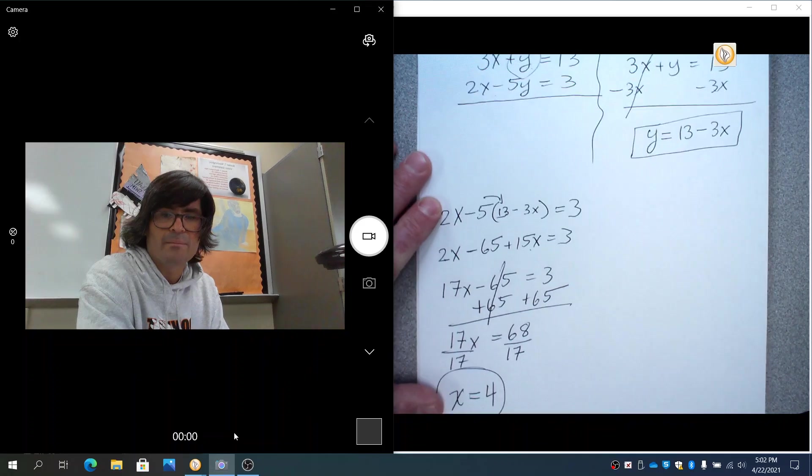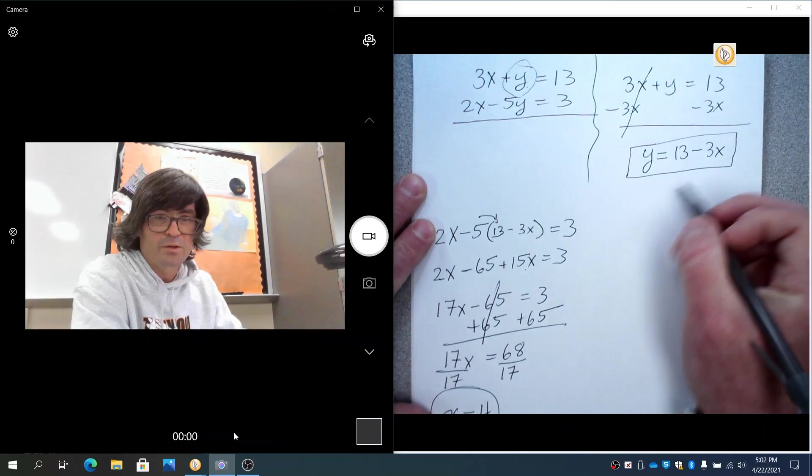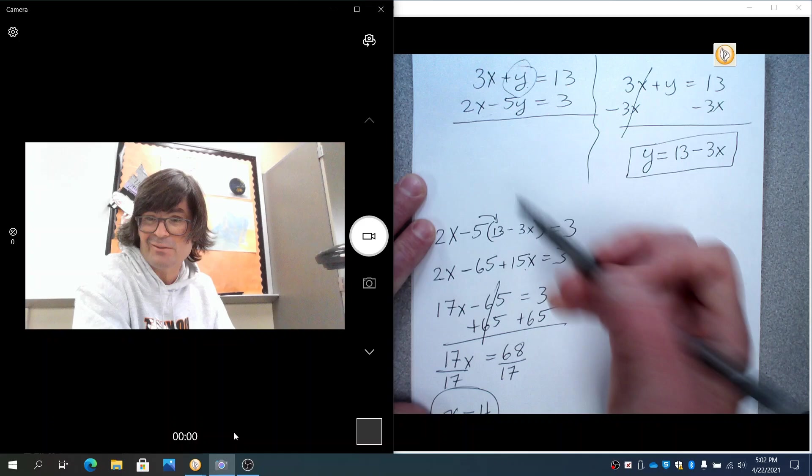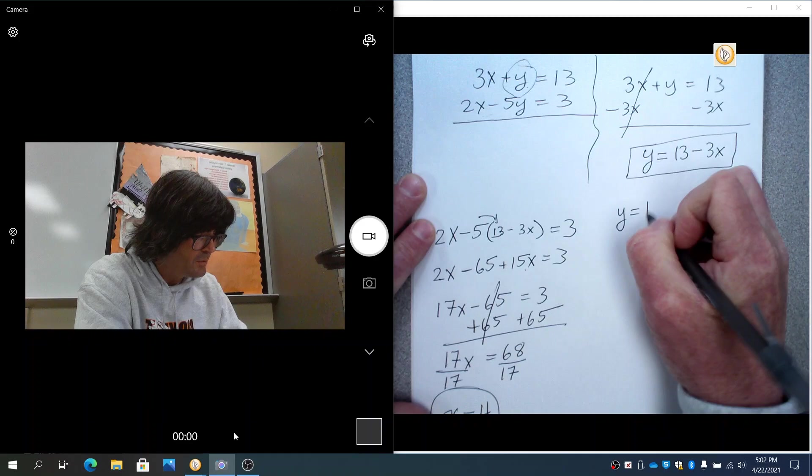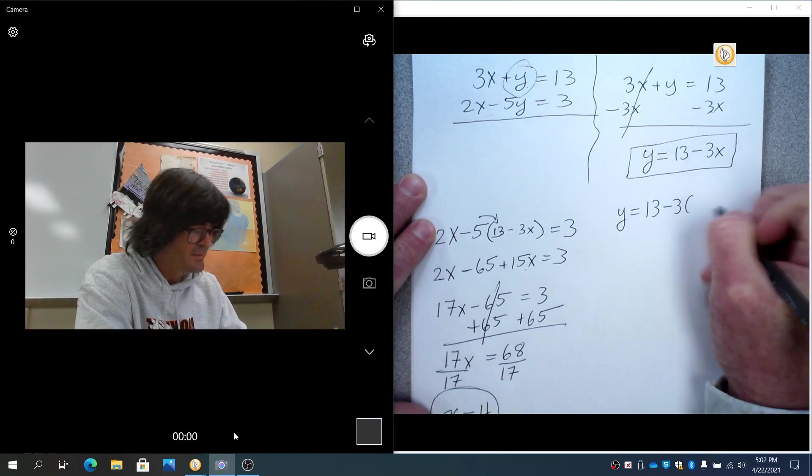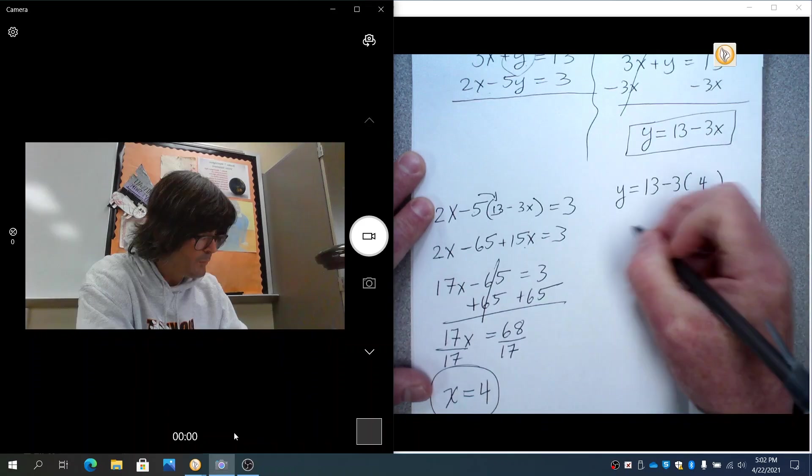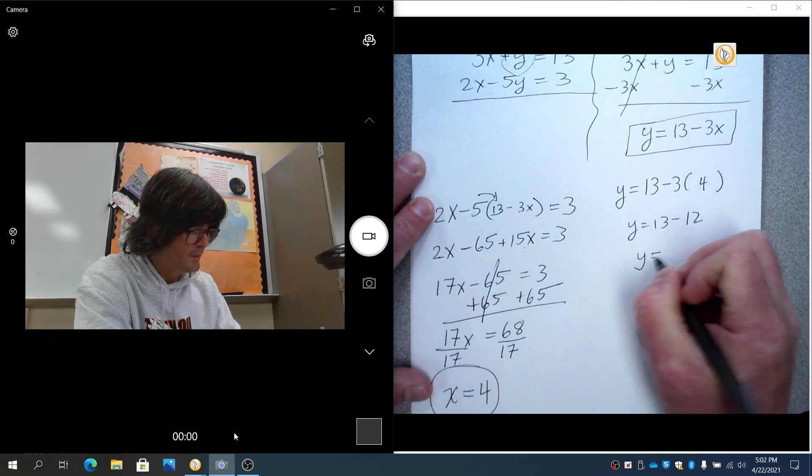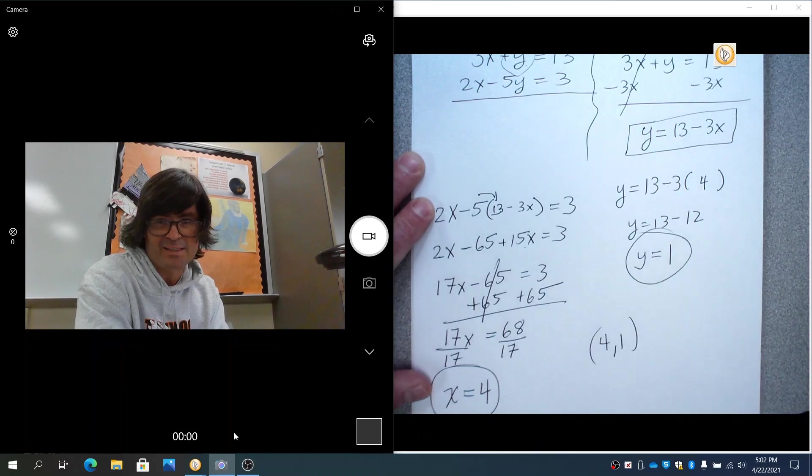So we've got x equals 4. The great thing about substitution is all you have to do, once you have your first variable, is plug it in right here. You could plug it in there or there, but that would be a lot of work because you'd have to solve for y again. You already have y on one side here. So just do 13 minus 3 times x. Instead of x, you're going to put in 4. So that would be y equals 13 minus 12, 3 times 4, and y equals 1. So 4, 1, again, is your solution. The exact same answer for the exact same problem with a different method. I hope that helps. Thank you.